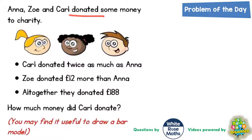Carl donated twice as much as Anna. That's another way of saying that Carl's amount is basically Anna's plus Anna's again, because he's doing two lots of her — two lots, twice as much.